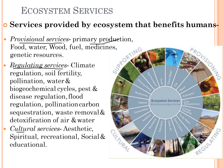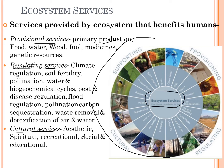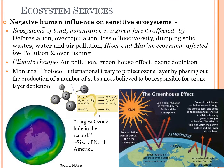Lastly we have cultural services, which include aesthetic, spiritual, recreational, social, and educational aspects. This pie chart shows a round diagram which includes all of the services that ecosystems render to us. Moving on, we have some of the negative human influences on sensitive ecosystems.